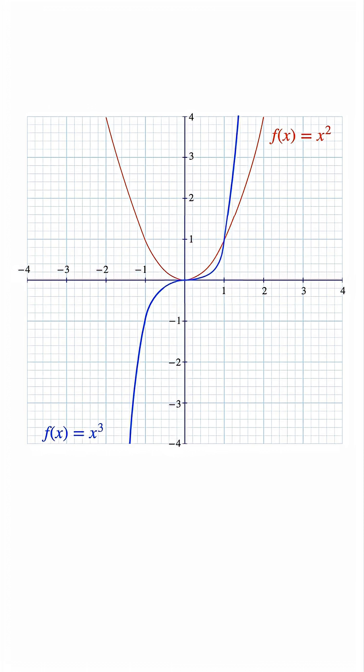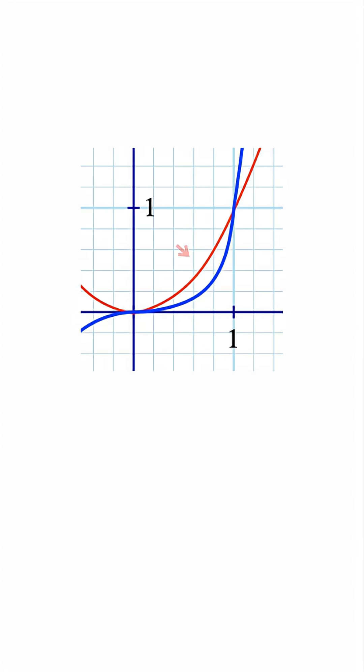Now, between zero and one, notice the difference. The x squared curve is higher than the x cubed curve. That small region between them is what we're finding the area of. They meet at x equals zero and x equals one. So our area is between those points.